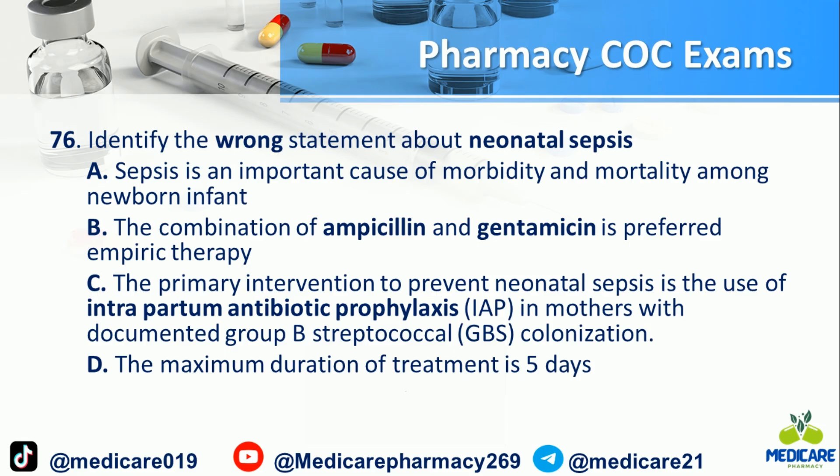Number 76: Identify the wrong statement about neonatal sepsis. a. Sepsis is an important cause of morbidity and mortality among newborn infants. b. The combination of ampicillin and gentamicin is preferred empiric therapy. c. The primary intervention to prevent neonatal sepsis is the use of intrapartum antibiotic prophylaxis in mothers with documented group B Streptococcus (GBS) colonization. d. The maximum duration of treatment is 5 days. The answer is D.